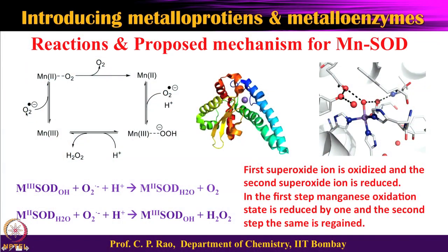To summarize: manganese 3+ SOD reacts with O2 minus dot plus H+ to give manganese 2+ SOD, releasing O2. Then manganese 2+ SOD reacts with another mole of O2 minus to give manganese 3+ and hydrogen peroxide. The first superoxide is oxidized, the second is reduced. Manganese goes from 3+ to 2+ in the first step and back to 3+ in the second step — a clean redox cycle.